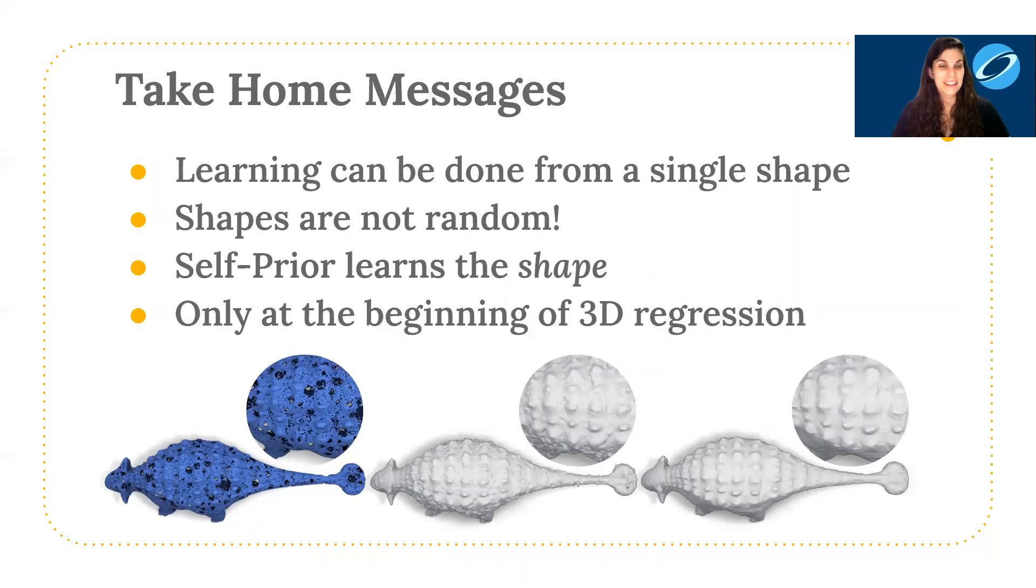So I hope I can give you some take-home messages. First of all, it is possible to learn from a single shape, and shapes are not random. In particular, they contain strong self-correlations which are exploited by the self-prior. Or in other words, the self-prior learns the shape. And we're really only in the early phases of learning 3D regression, and it will be really exciting to see what else we can do with 3D neural nets.